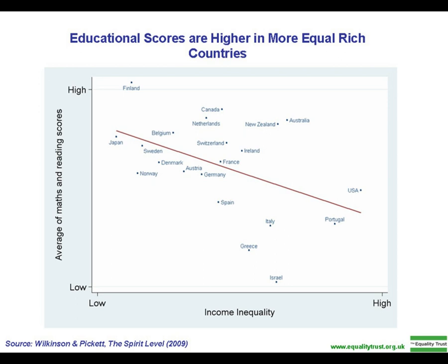Education economics, or the economics of education, is the study of economic issues relating to education, including the demand for education, the financing and provision of education, and the comparative efficiency of various educational programs and policies. From early works on the relationship between schooling and labor market outcomes for individuals, the field has grown rapidly to cover virtually all areas with linkages to education.